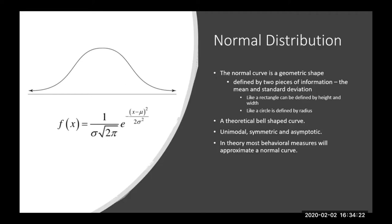A big piece of what statistics is about is making guesses and understanding the likelihood of being in certain areas. Even natural things like flower pattern growth or how far children wander from parents at the park tend to follow a normal distribution. It's a pretty cool distribution.